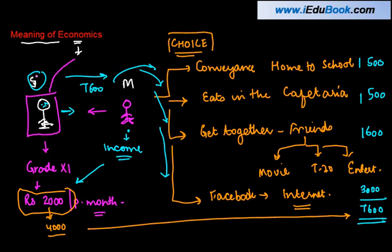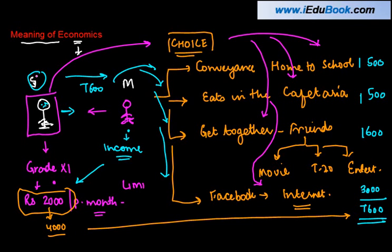Why? Because this guy has to choose between either of these options because he has limited money at his disposal, but the demands that he has or the requirements that he has or the wants, if I may call it, that he has are unlimited or at least more in number than the amount of money that he has.